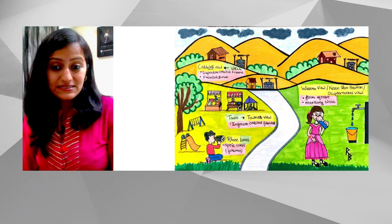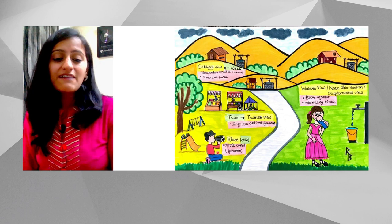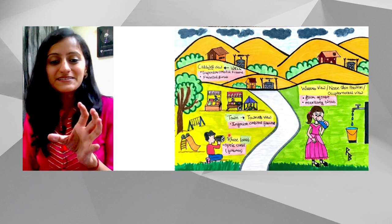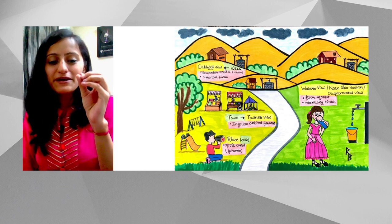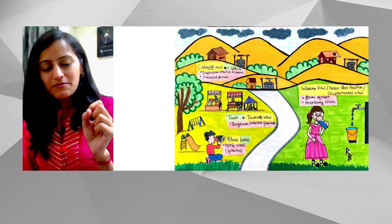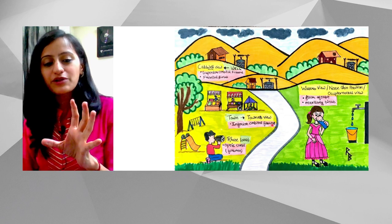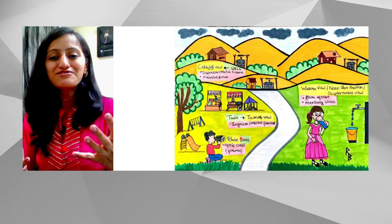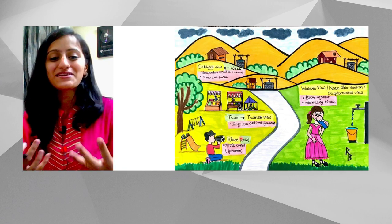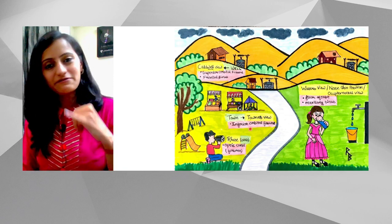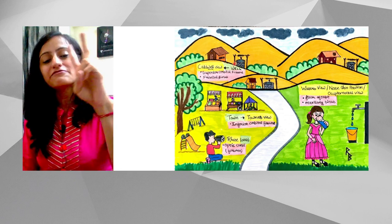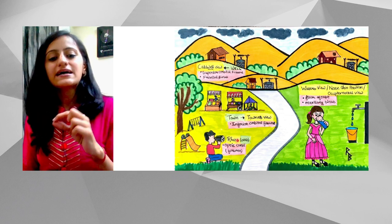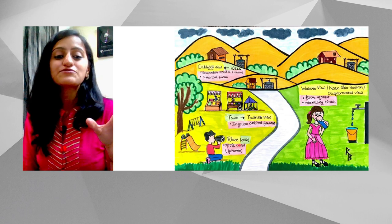As the girl is drinking water, there is a guy named Reese who is staring at her through a foramen — basically binoculars shaped like a foramen. So Reese's view is for the optic foramen, also called the optic canal. To quickly recap: Townies — inferior orbital fissure; Caldwell — superior orbital fissure and frontal sinus; Waters — maxillary sinus and floor of orbit; Reese's — optic canal.